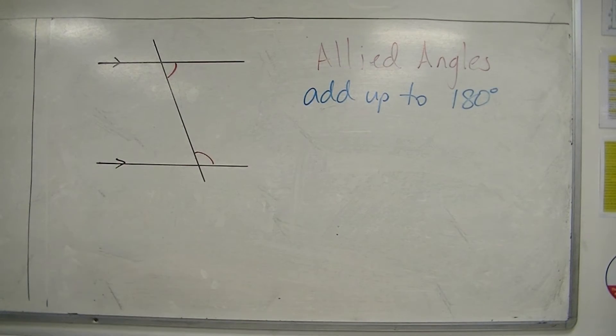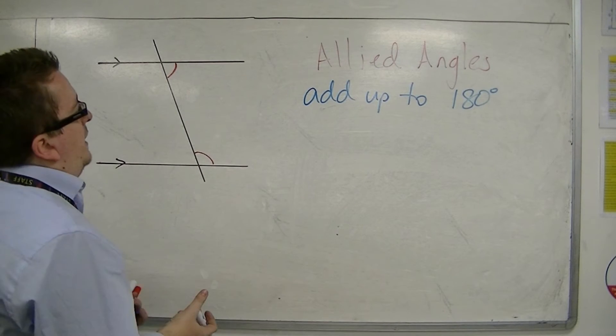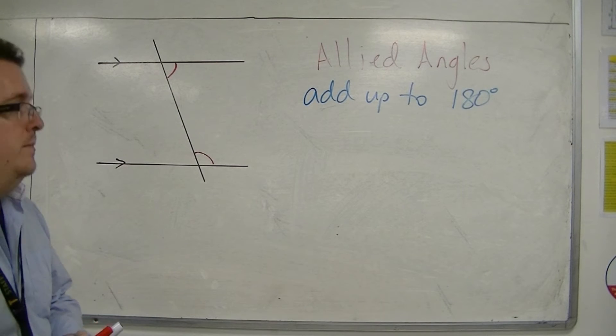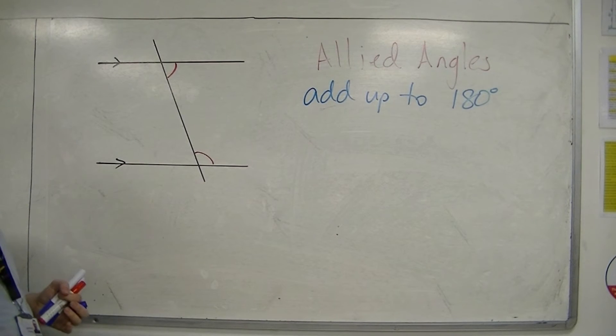And this is a very important property that we can utilize. So instead of having corresponding and alternate angles which are the same, allied angles add up to 180 degrees.